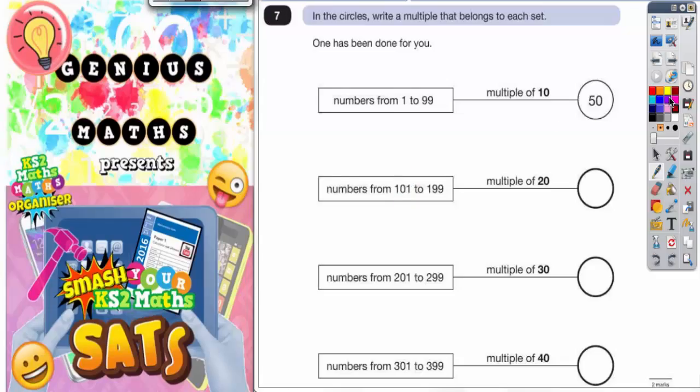Question seven: In the circles, write a multiple that belongs to each set. One has been done for you. Now there are two ways of doing this question. Very simply, what you could do for multiples of 20 is just write out the multiples of 20.